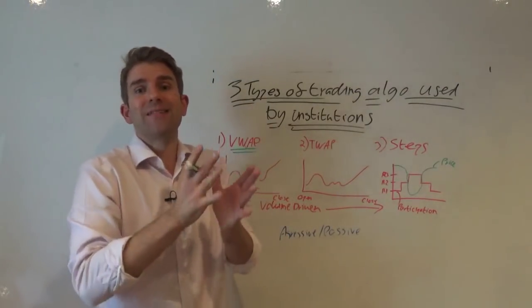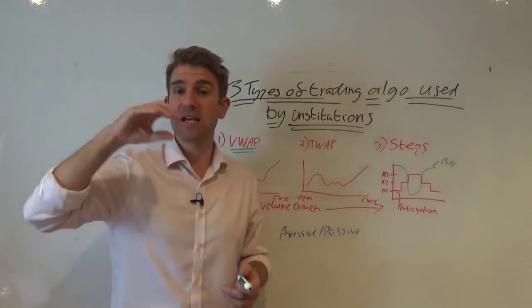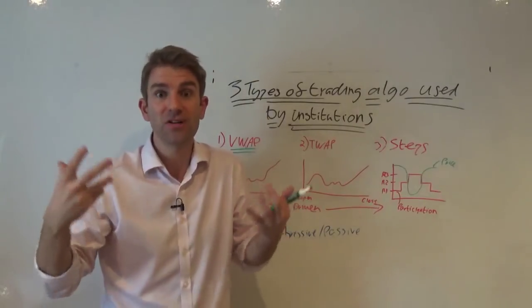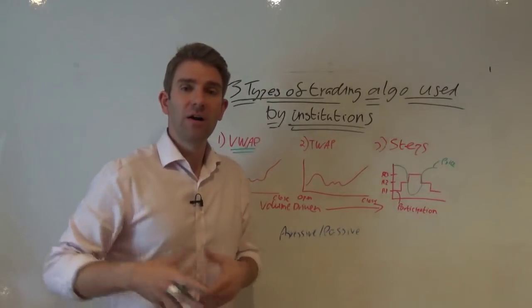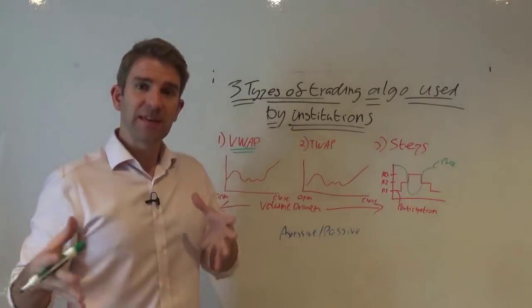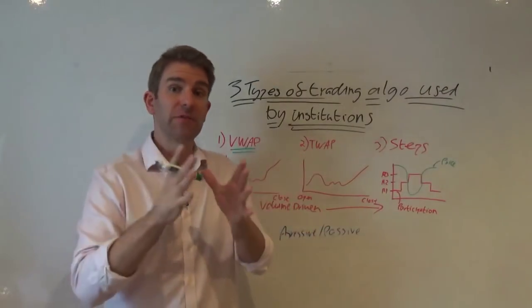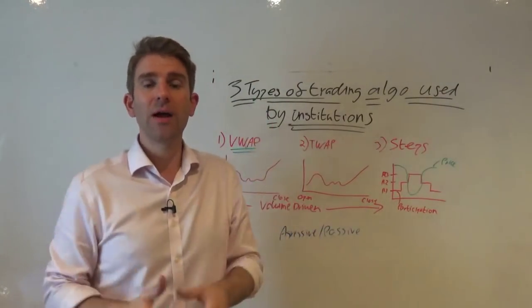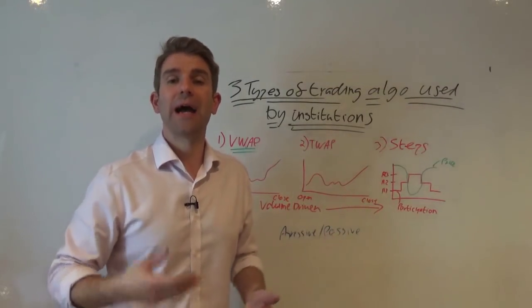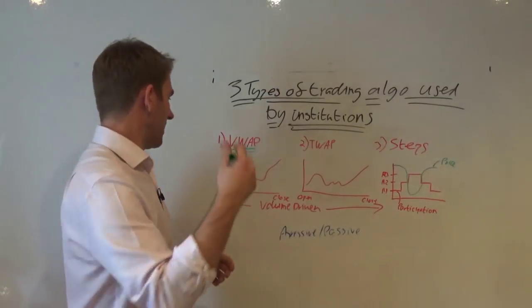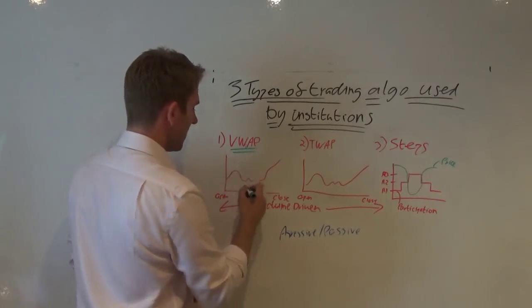What this algo aims to do is match the VWAP of the instrument over a specific period of time. If you've got your charts and you put up the VWAP, you'll see it's basically a moving average that's weighted by volume — so more volume gets done, the more weighting that gets given, as opposed to just price on a moving average. Over the day you'll have a VWAP that's the end-of-day closing VWAP price, which is basically the average price weighted by volume.